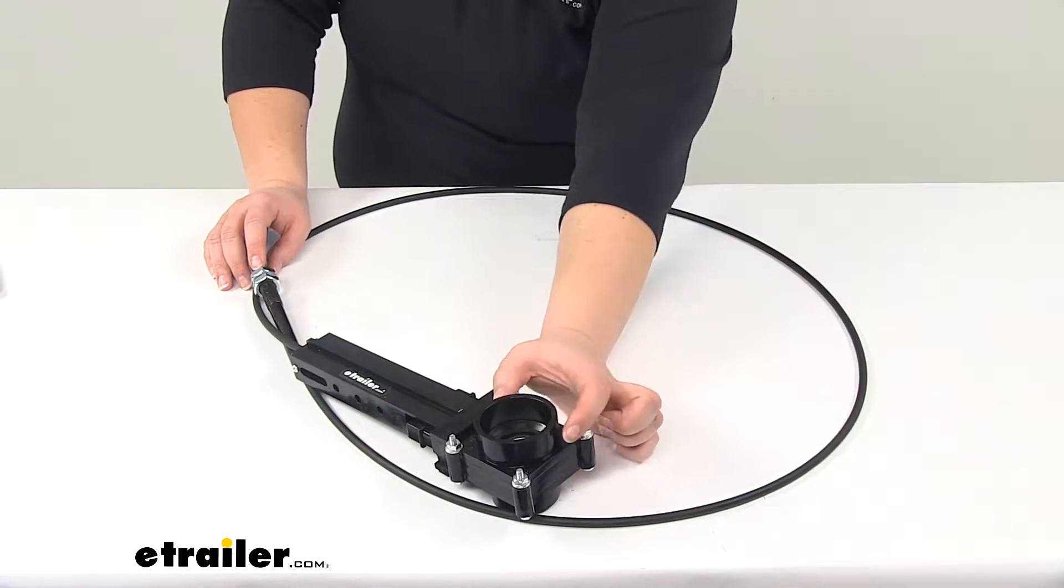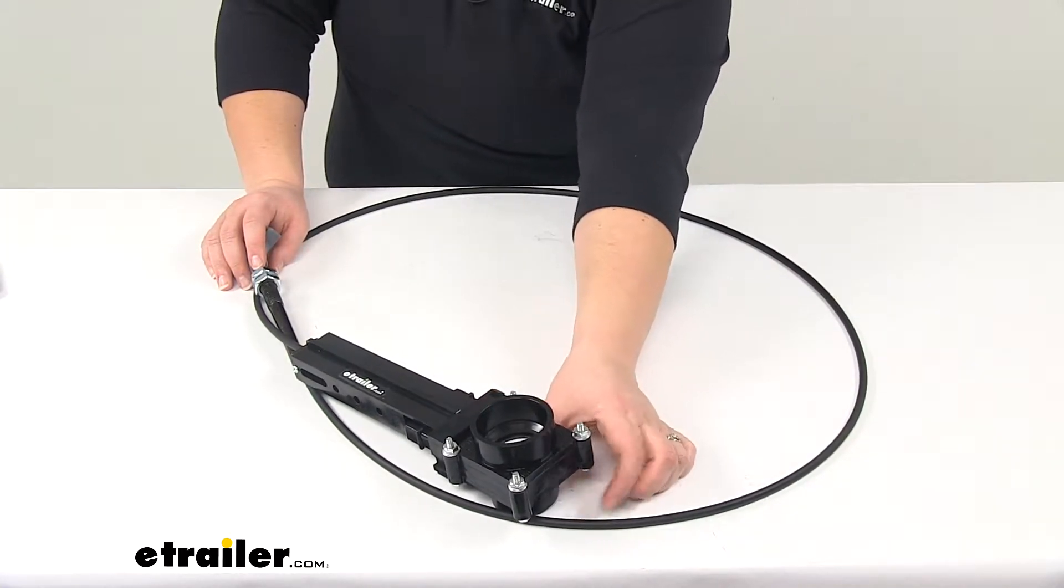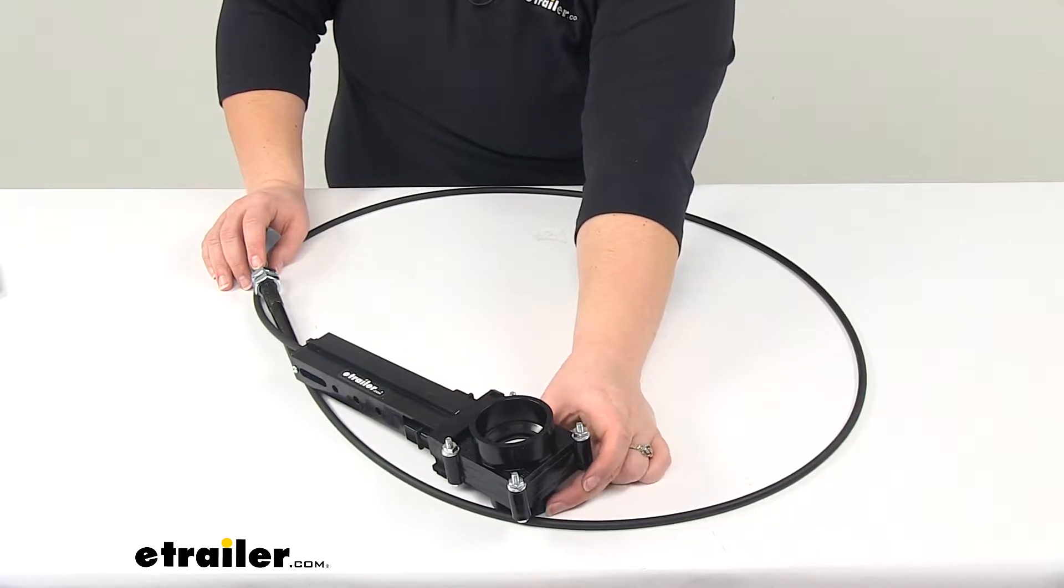The hub or larger side is going to slide onto the sewer pipe and the spigot or smaller side is going to slide into the sewer pipe.